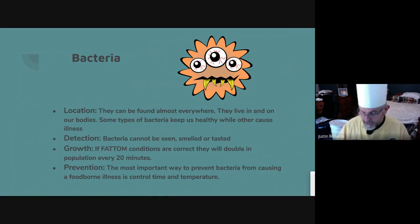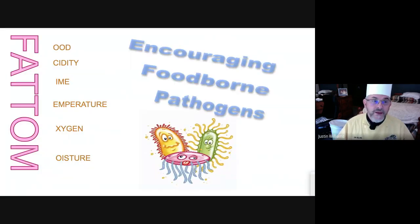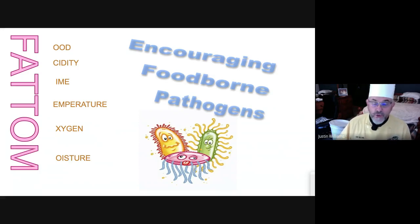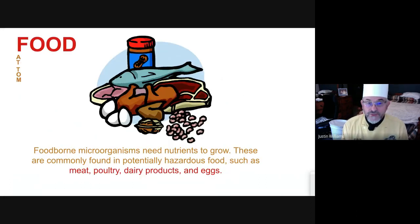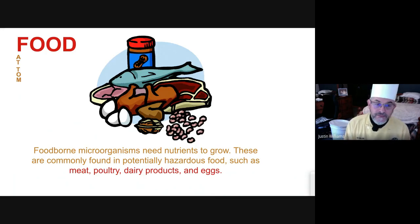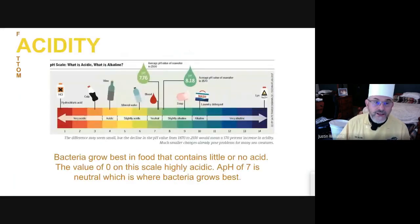FAT TOM stands for Food, Acidity, Time, Temperature, Oxygen, and Moisture — all of which can either encourage or stop the growth of microorganisms. Food is the first factor: microorganisms want something to eat, and their favorite is something high in protein — like meat, poultry, dairy, eggs, and cheese. For acidity, they do not like acid at all. Something with zero to no acid is where they'll grow the most.